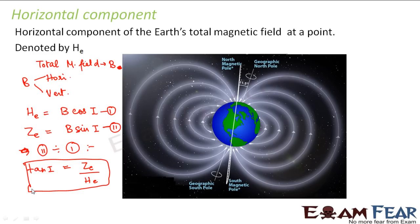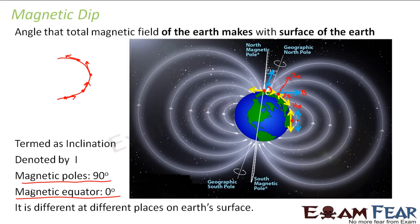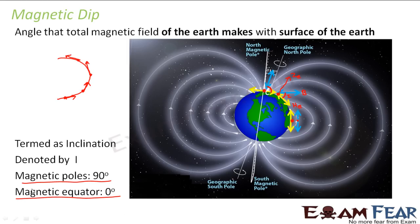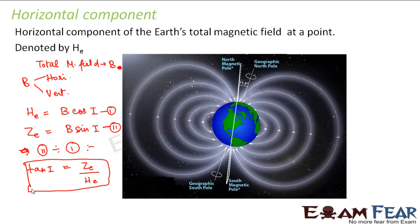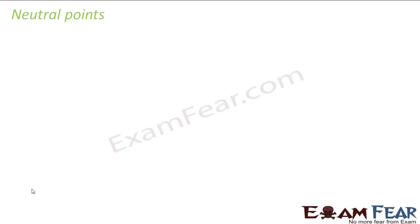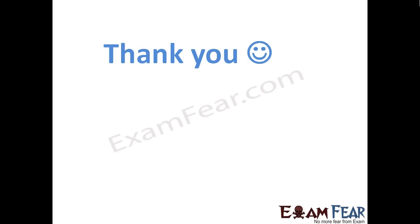I hope I was able to explain these three components, because it is not very easy to just read in your textbooks and understand. That is why I gave you this diagram, because I think this diagram would have helped you to understand the horizontal and vertical components of the earth's magnetic field, the magnetic dip as well as the magnetic declination. Thank you.